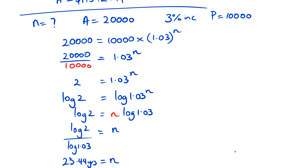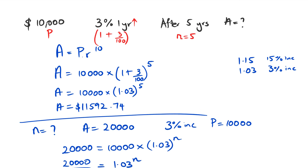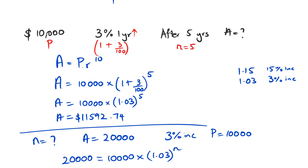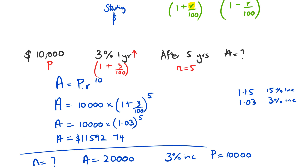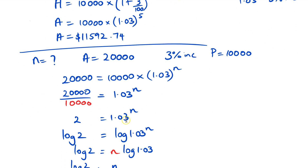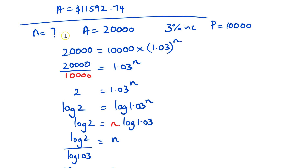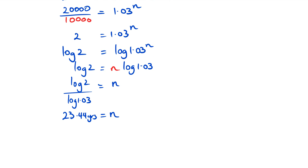There are only three kinds of questions they could ask. The first one: they give you P, R, and N and ask you to find A. The second: they give you everything else and ask you to find N — which we just did. Now I'm going to do one where we actually try and figure out what R is.